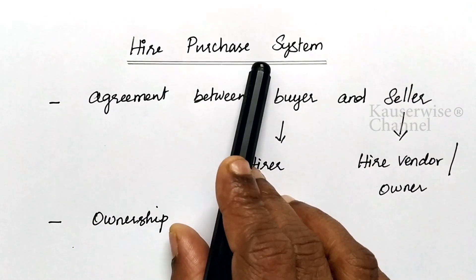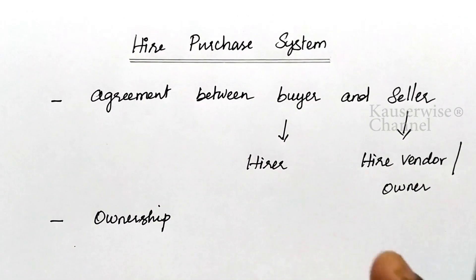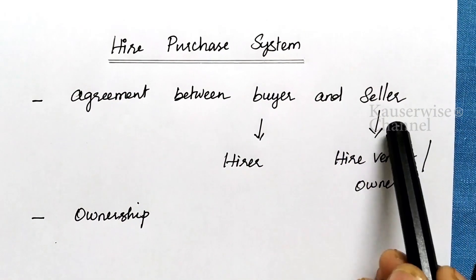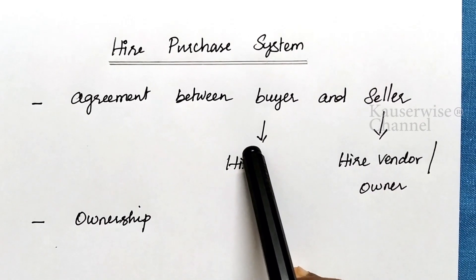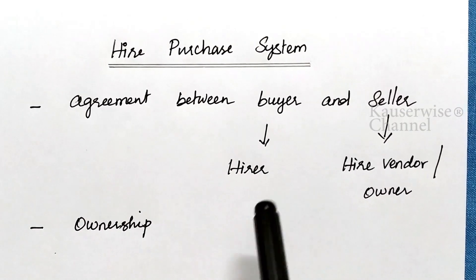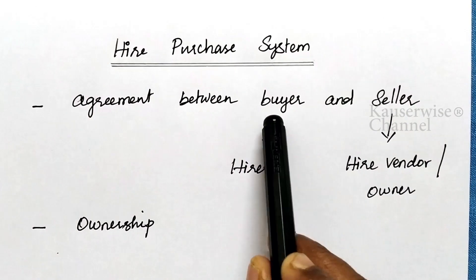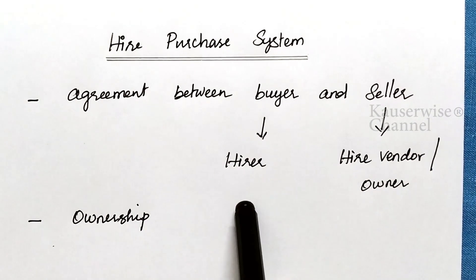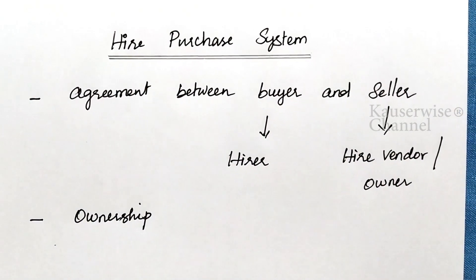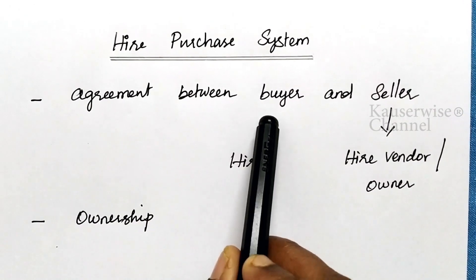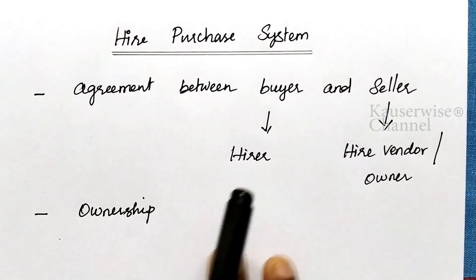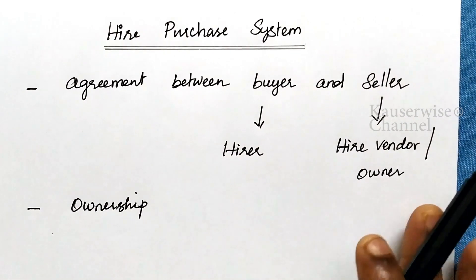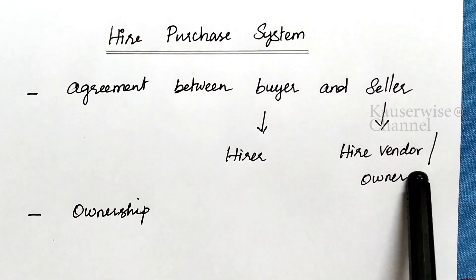According to this agreement, the buyer will acquire some goods or some asset from the seller on a hire purchase basis. The seller will transfer the goods to the buyer, and the buyer will make use of the asset. For that, the buyer will pay some amount on a periodical basis to the seller. That amount is called hire charges or installment amount.